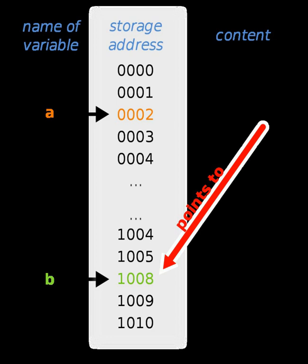While pointer has been used to refer to references in general, it more properly applies to data structures whose interface explicitly allows the pointer to be manipulated arithmetically via pointer arithmetic, as a memory address, as opposed to a magic cookie or capability which does not allow such.